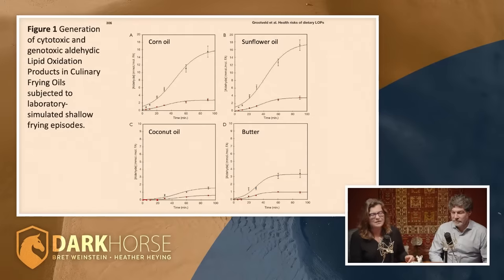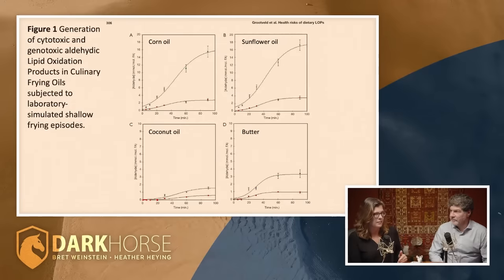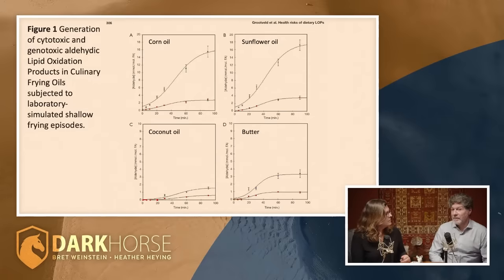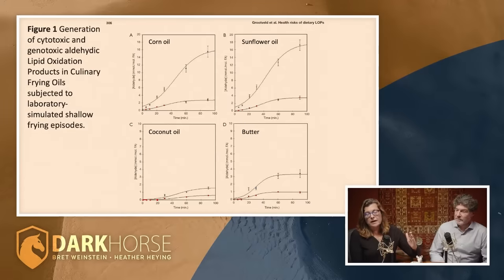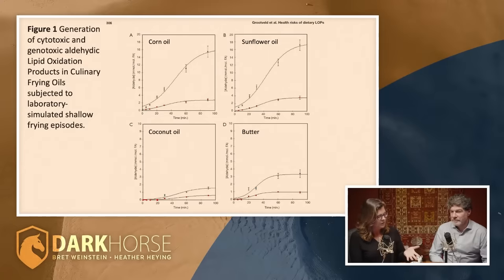They started at time zero on the x-axis and go only through 100 minutes, which is a lot less time than you'd get in a fryer being used for a week solid before you throw out the fat. They are effectively testing pan frying over a short period of time. 100 minutes isn't that short, but compared to a week. On the y-axis you have these measures of toxicity — I'm not going to go into the chemistry, but there are these forms of aldehyde.